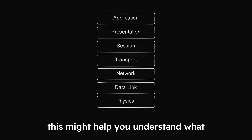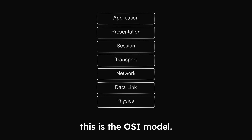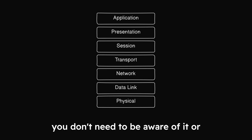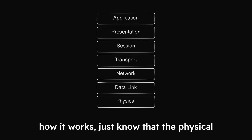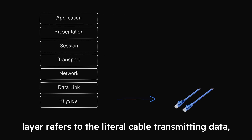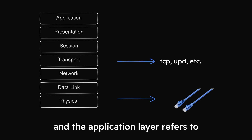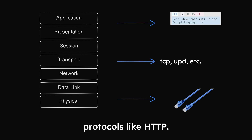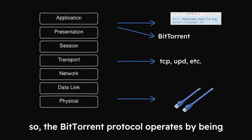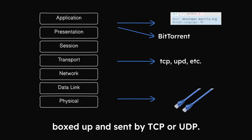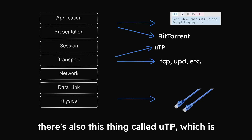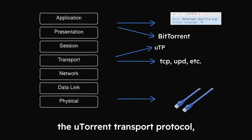This might help you understand what we're talking about though. This is the OSI model. You don't need to be aware of it or how it works — just know that the physical layer refers to literal cable transmitting data, the transport layer refers to stuff like TCP and UDP, and the application layer refers to protocols like HTTP. The BitTorrent protocol operates by being boxed up and sent by TCP or UDP. There's also this thing called UTP, which is the uTorrent transport protocol.